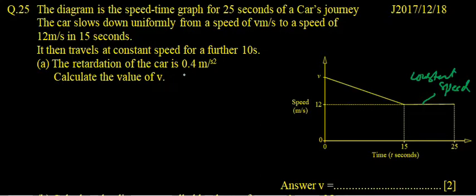The retardation of the car is 0.4 meters per second squared. Calculate the value of V. So retardation is always in the speed-time graph when the speed is slowing down, and it is definitely more than 12 because the graph shows the value is more than 12.